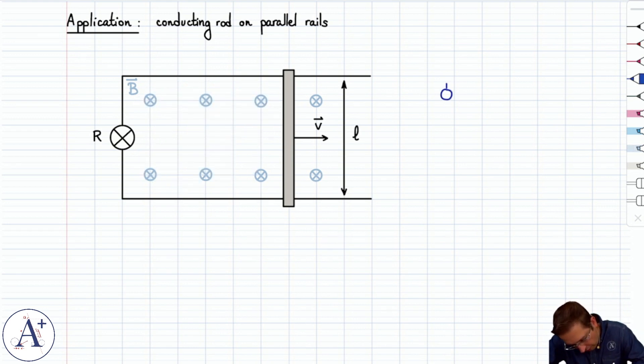So phi-b, the magnetic flux, is directed into the page and is increasing. By Lenz's law, the induced current has to create an induced magnetic field that opposes this increase into the page, meaning that it must create B-induced that points out of the page to oppose the increase in magnetic flux into the page.